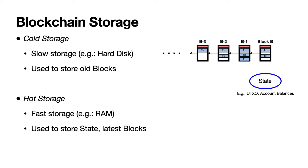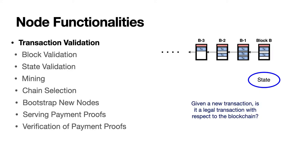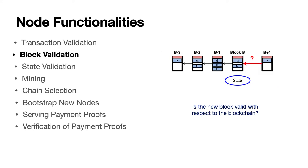Next I'll describe the other keyword in the title: blockchain functionalities. A node in a blockchain may have several functionalities. First is transaction validation — when a new transaction is submitted to be added to the blockchain, the node checks if it is a legal transaction with respect to the blockchain. Second is block validation — given a newly mined block, the node checks if the block is valid with respect to the blockchain and otherwise follows all the rules of the blockchain protocol.